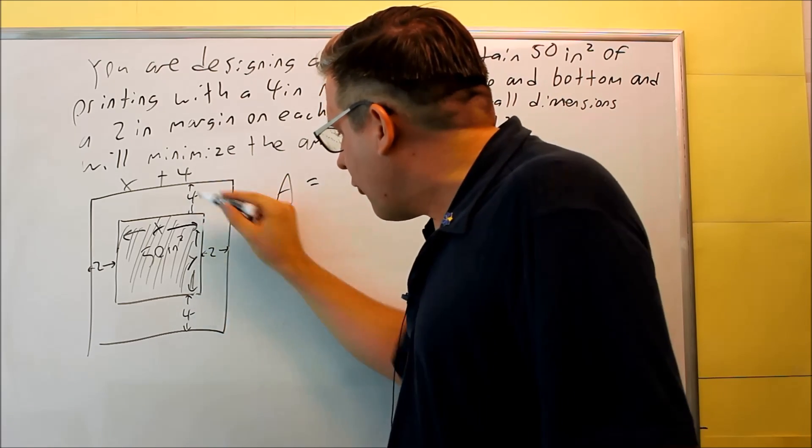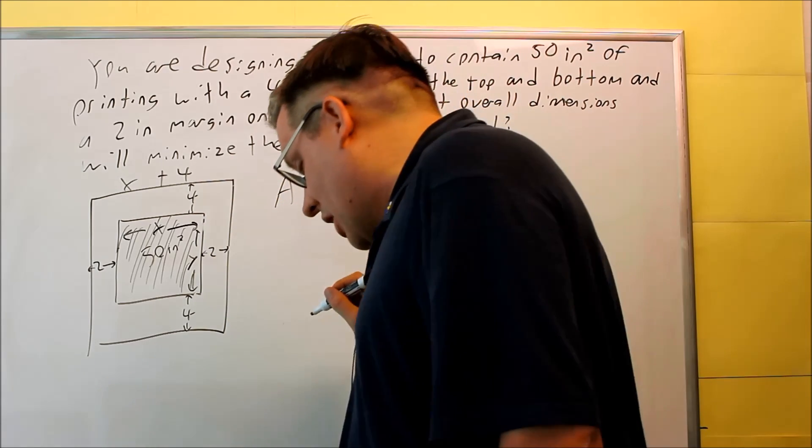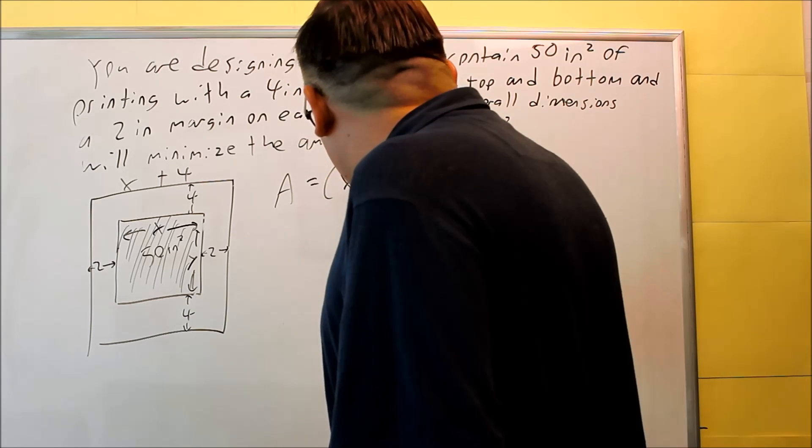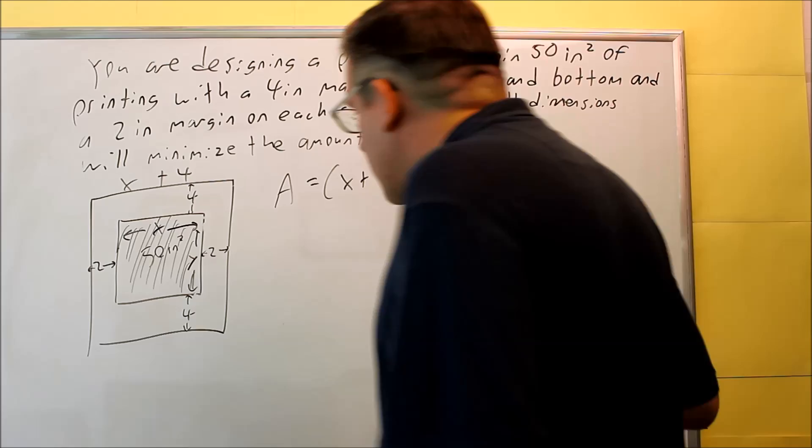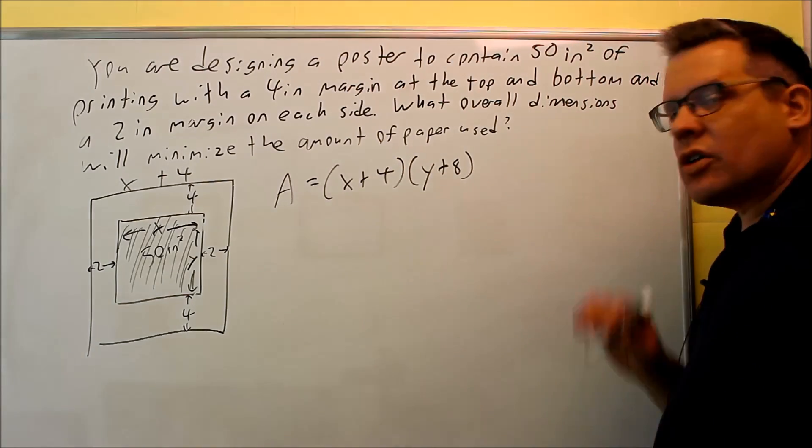Going up and down, we have a y, a 4 and a 4, and a y plus 8. So we're going to do x plus 4 and then y plus 8. So that's our area formula.